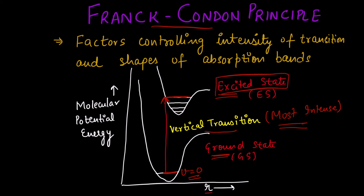Depending on the internuclear separation, these potential energy curves can vary, and hence the intensity of transitions can also vary. You can have transitions to various vibrational levels of the molecule, but the most intense will be the first one — from the ground state to the corresponding higher vibrational energy level in the excited state. This is the Franck-Condon principle.